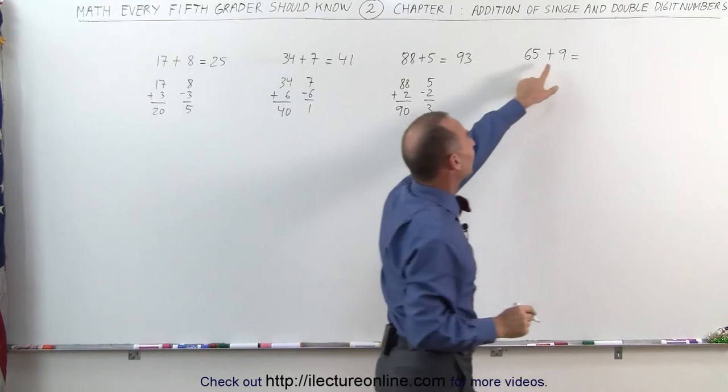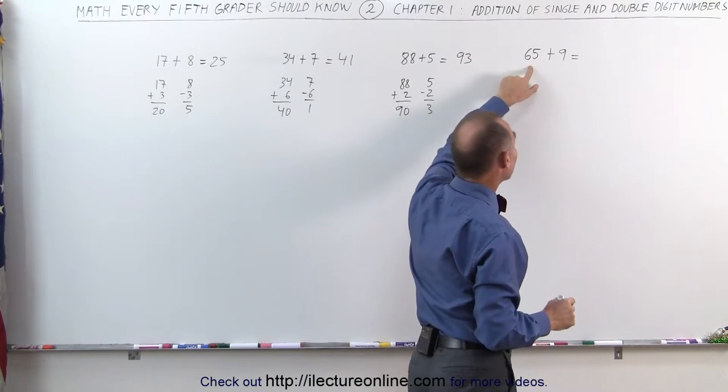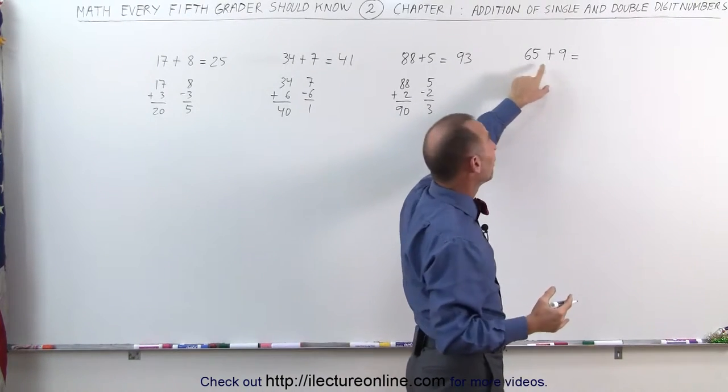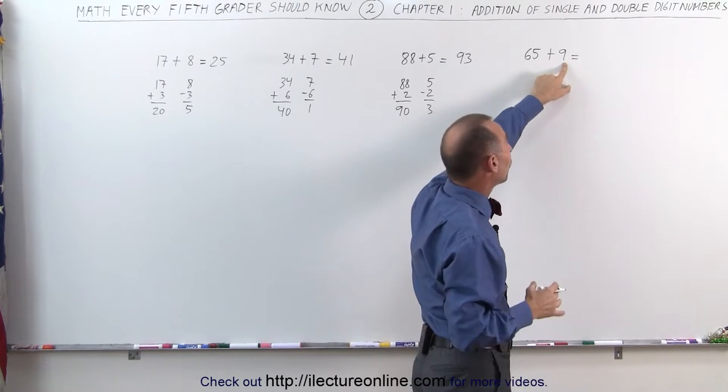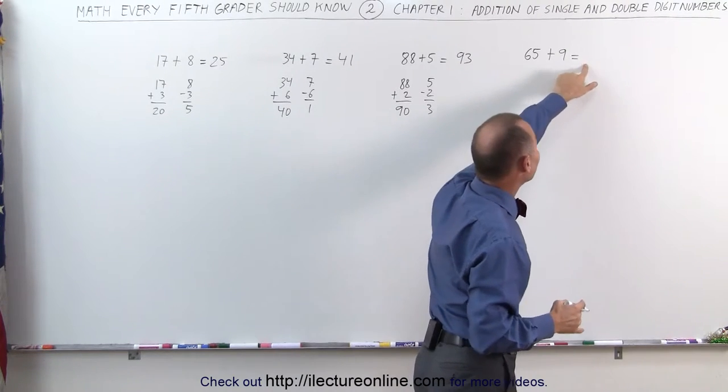Next problem: 65 plus 9. If I add 5 more to 65, that gives me 70. 5 subtracted from 9 gives me 4, and 70 plus 4 gives me 74.